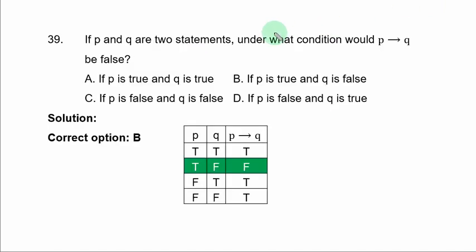Question 39, if P and Q are two statements, under what condition would 'if P then Q' be false? That is only possible when the first statement is true and the second is false. So, you have B. If P is true and Q is false, then 'if P then Q' becomes false. B is the correct option.